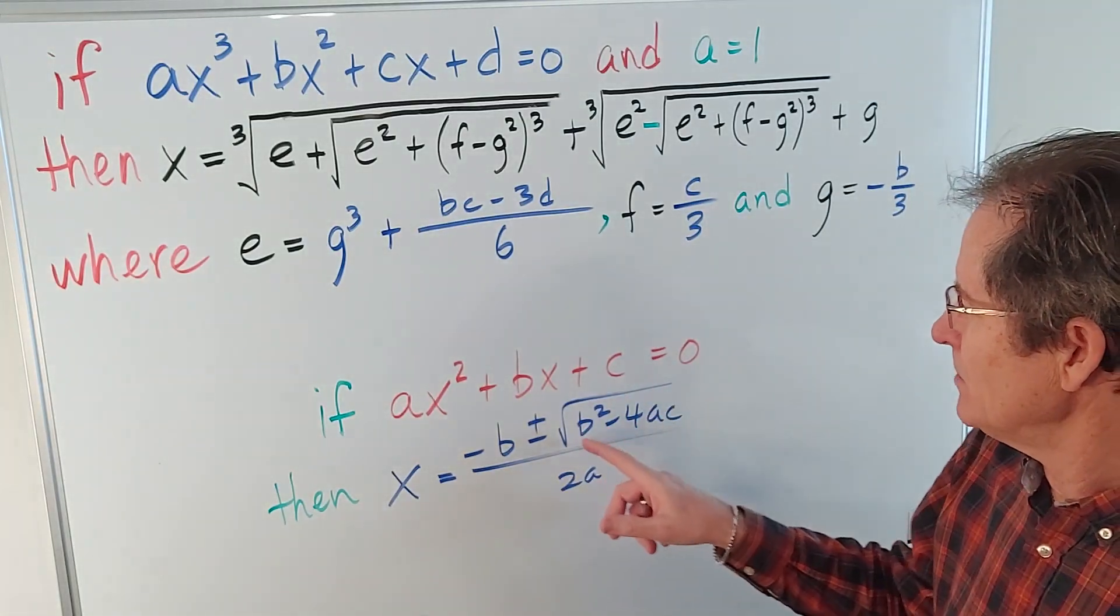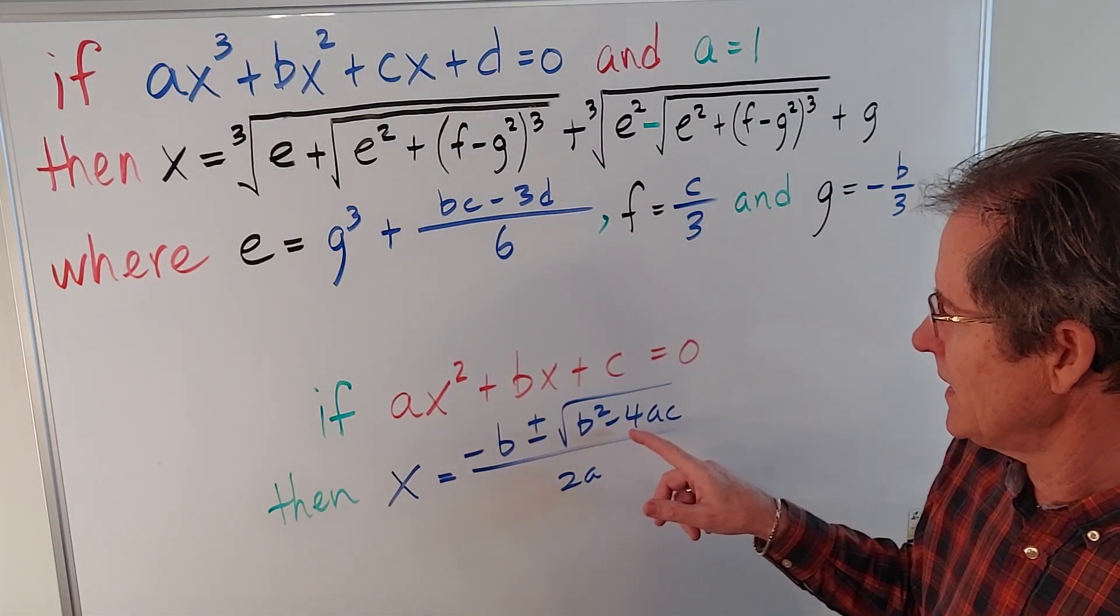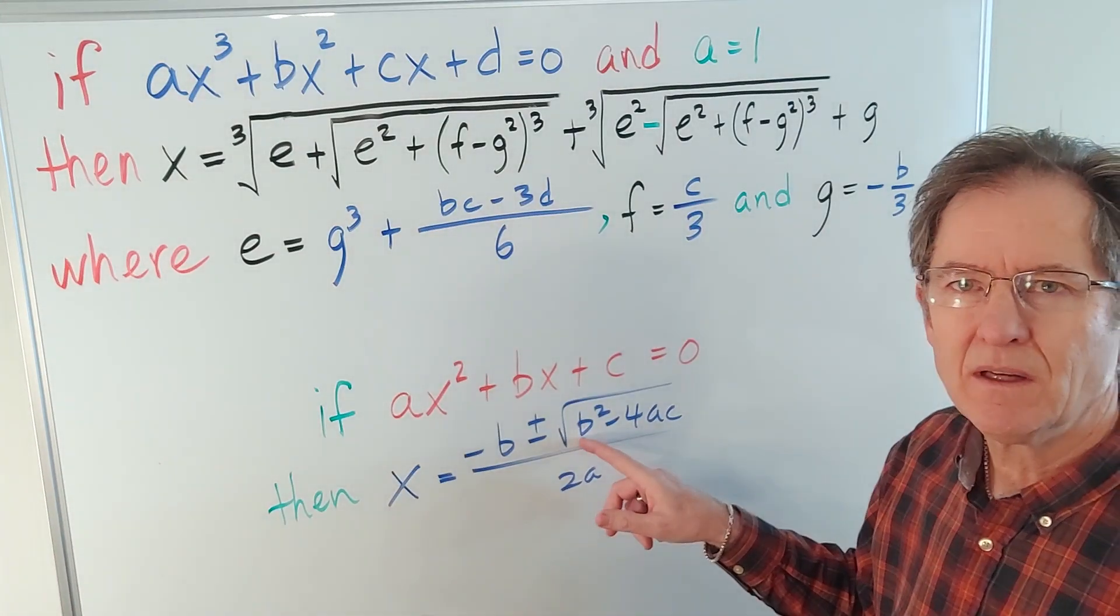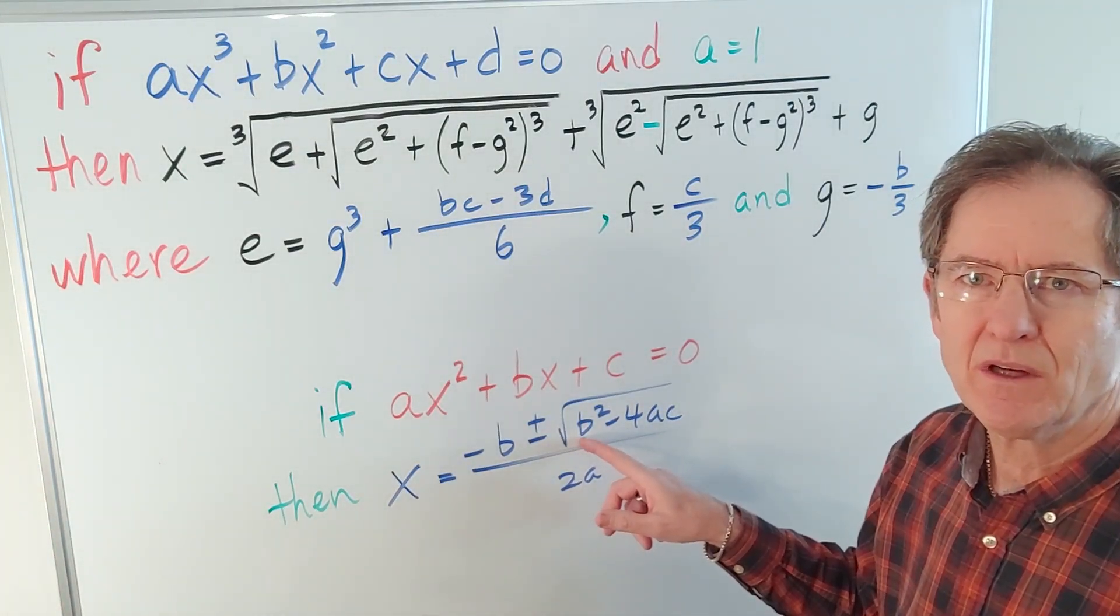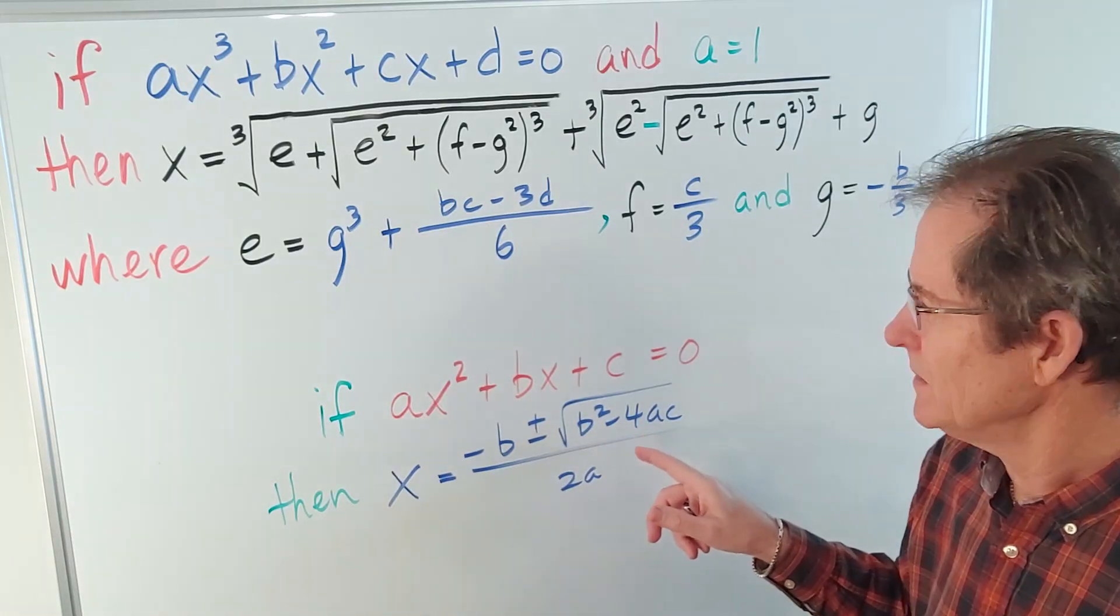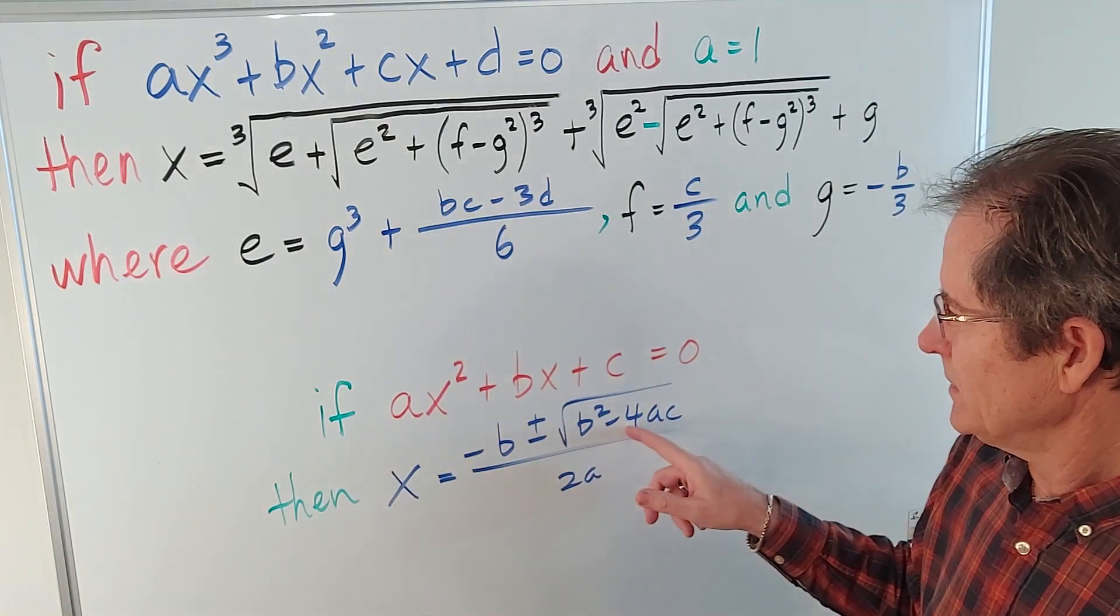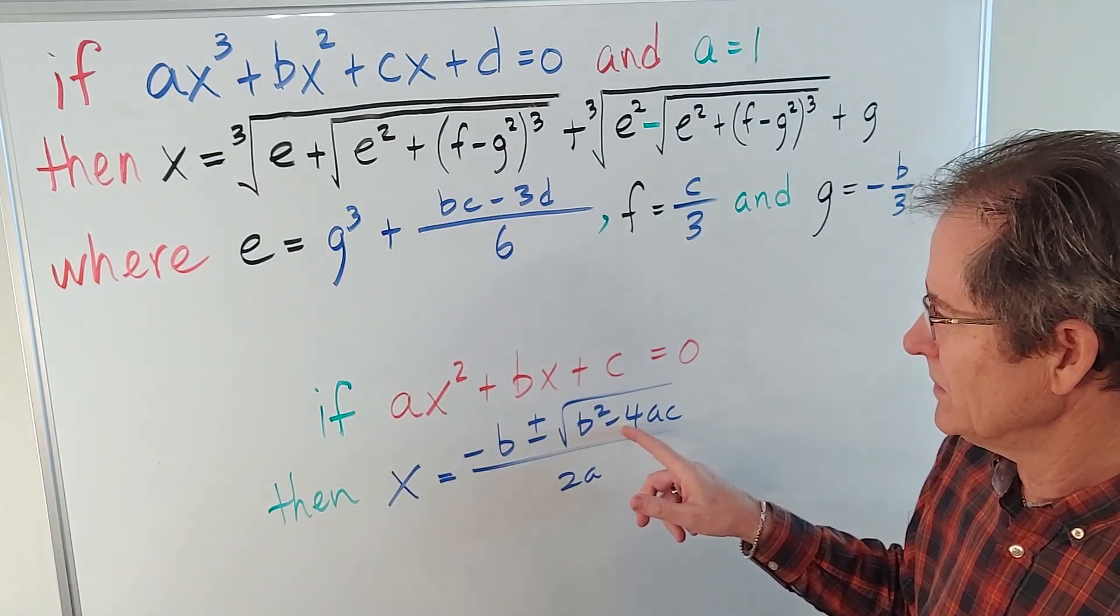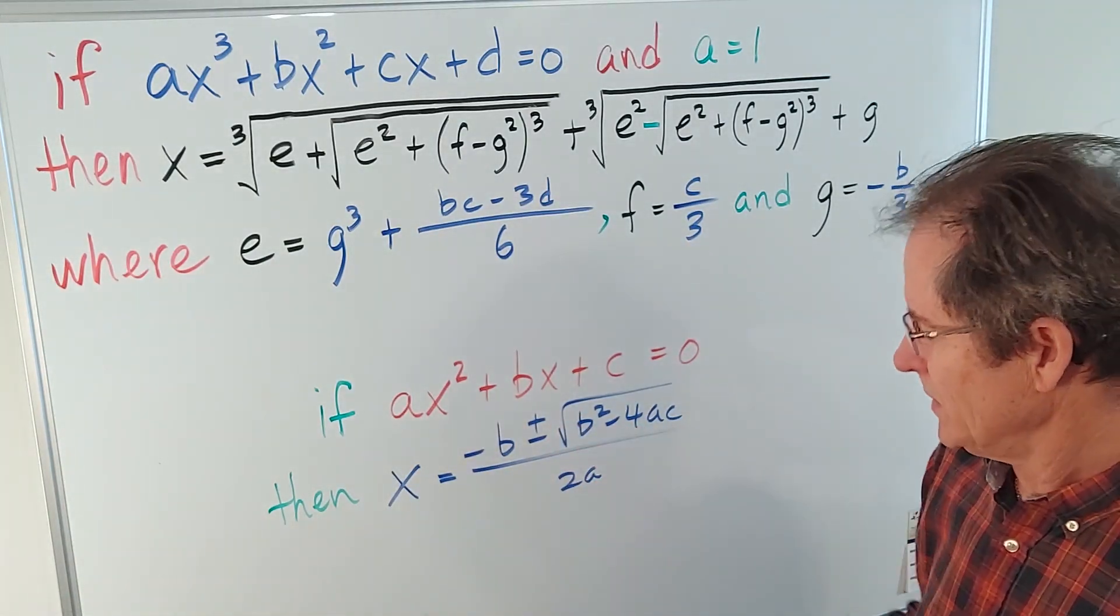And it all depends on b squared minus 4ac because if that's negative, you can't take the square root of it unless you consider imaginary numbers, so you get no solution. If it's zero, you get one solution because you're adding and subtracting zero. And if it's not zero, you get two solutions because of the plus or minus.